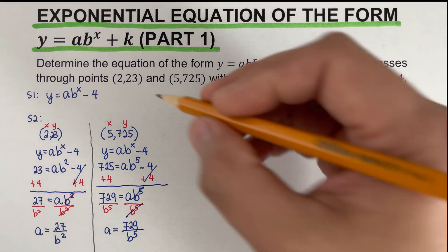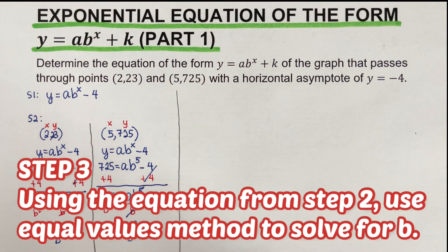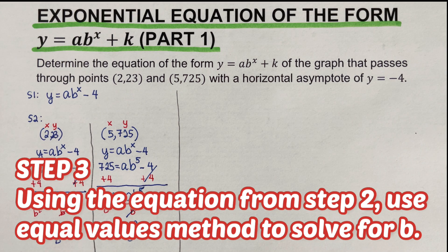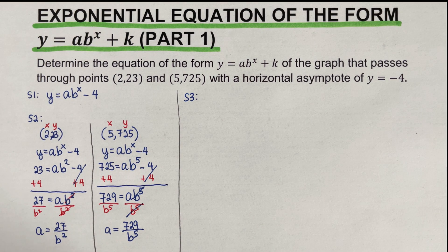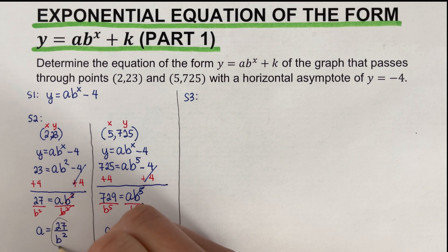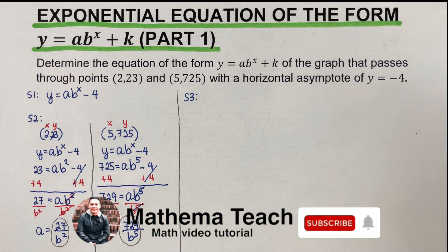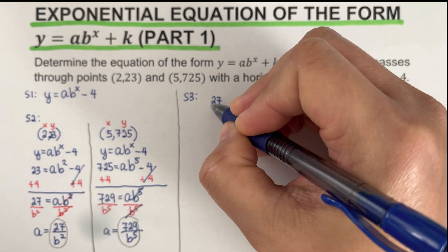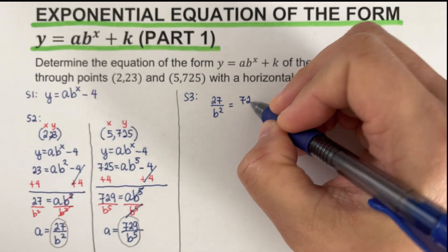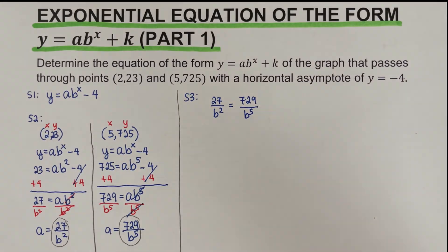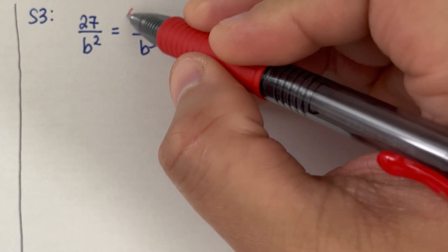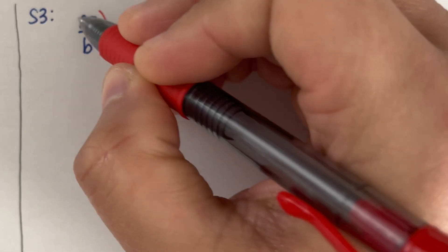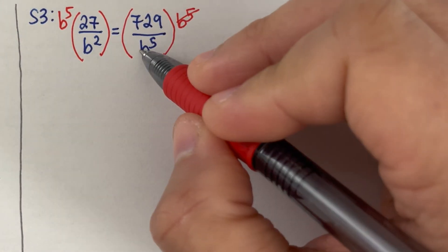Step 3: using the equations from step 2, use the equal values method to solve for b. Both expressions equal a, so we set them equal: 27 over b² equals 729 over b to the fifth. To get b on one side, multiply both sides by b to the fifth.